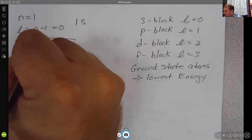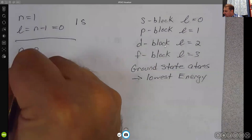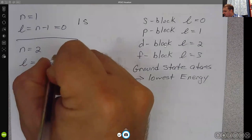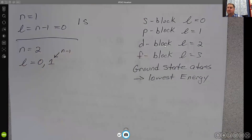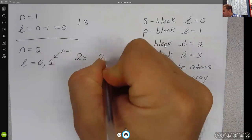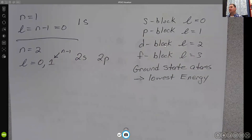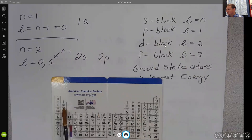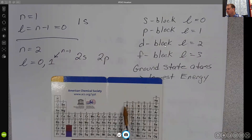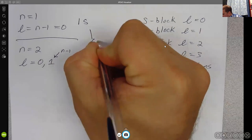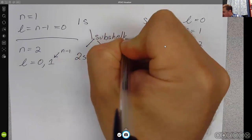For N equals 2, our allowed values of L are 0 and 1, which corresponds to N minus 1. So we can have 2s and we can have 2p. The 2s we see over here. The 2p we see over here. This would be called the subshell.